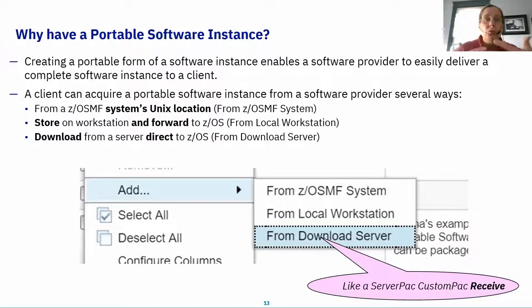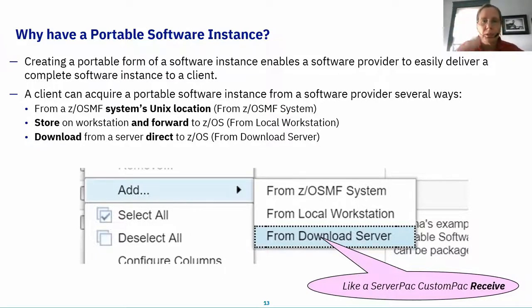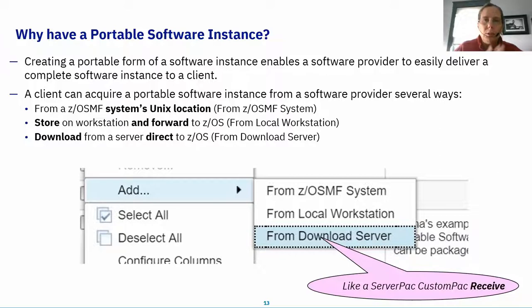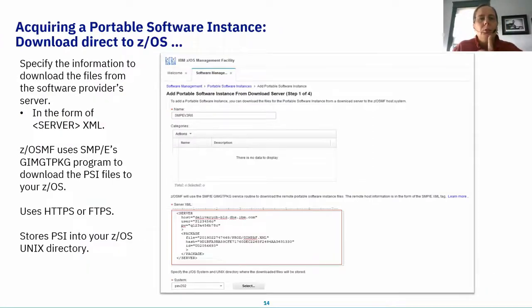You have three locations you can add it from: first, if you've already got it on your ZOS UNIX directory; second, if you have it downloaded on your workstation; and third — probably the most popular option — from a download server, meaning you pull it directly from IBM's Boulder production site over the internet into your local system. All three of these options are a little like the ServerPac receive process; we just call it 'Add a Portable Software Instance' here. Everything you could do in the ServerPac ISPF dialogs you can do here — just with a slightly different name. Think of it as a receive.